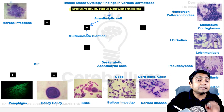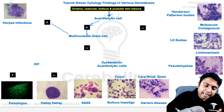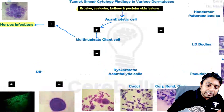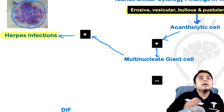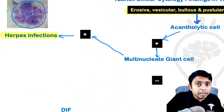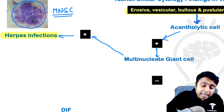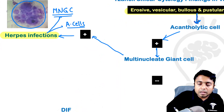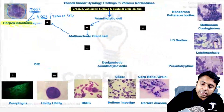Then observe whether multinucleated giant cells are seen or not. If we happen to see multinucleated giant cells, then the diagnosis is going to be herpes simplex viral infection — herpes infections. This picture shows multinucleated giant cells, where a single cell appears to have multiple nuclei. Remember, in herpes infections we are not only going to see multinucleated giant cells — acantholytic cells are also positive. Please remember, acantholytic cells are also referred to as Tzanck cells.